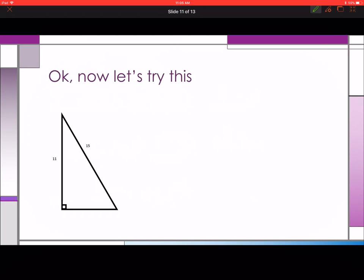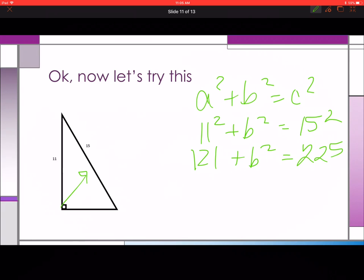Alright, so let's try this one. Again, a squared plus b squared equals c squared. That's 11 squared plus b squared equals 15 squared. 121 plus b squared is equal to 225. Now we're biobooping. Isolate my variable, opposite operation. b squared is equal to 104.